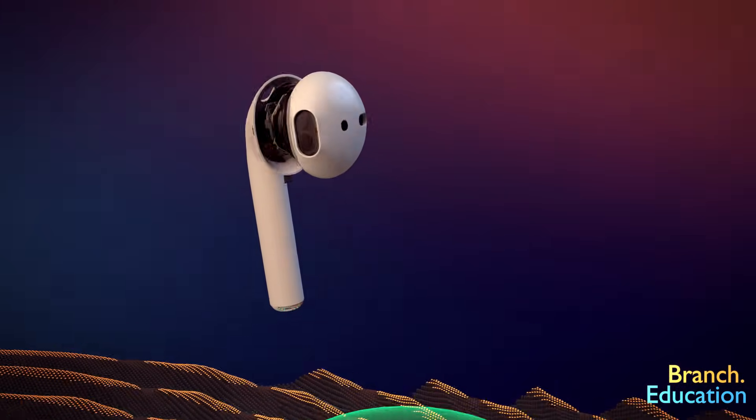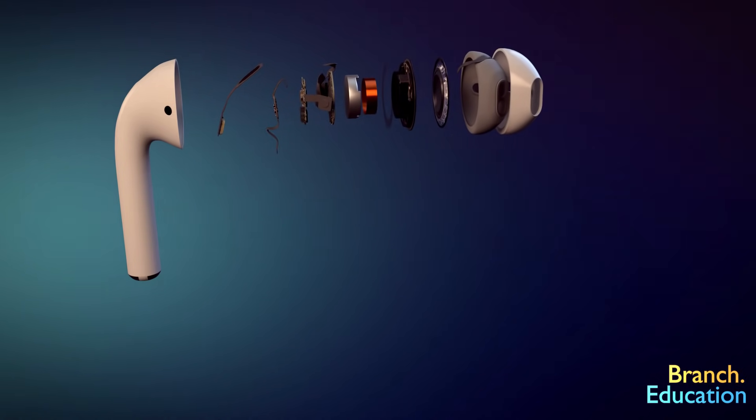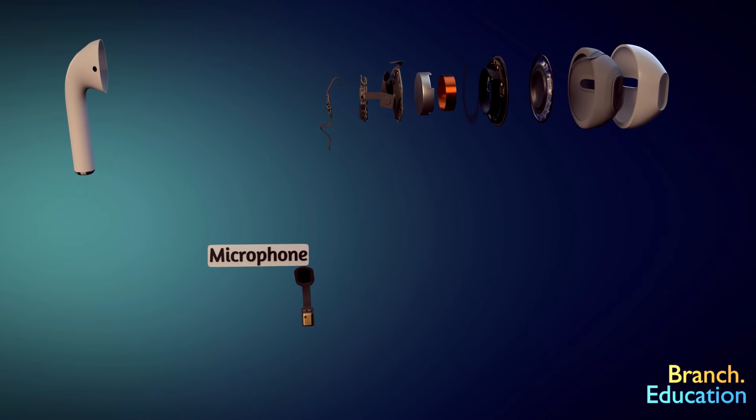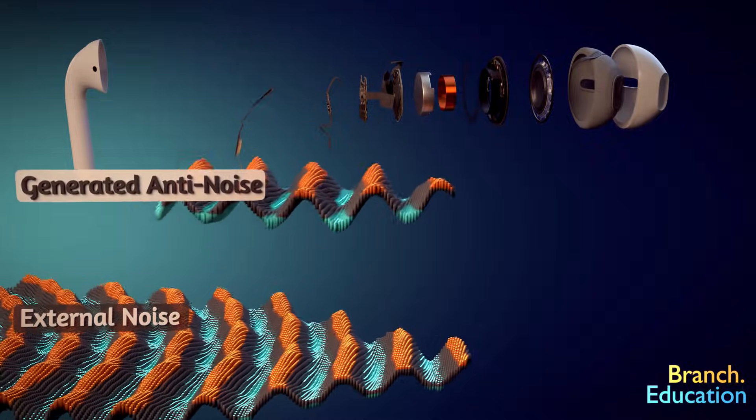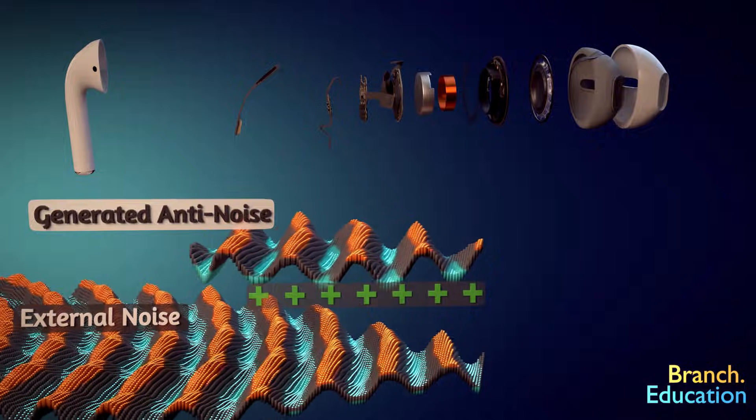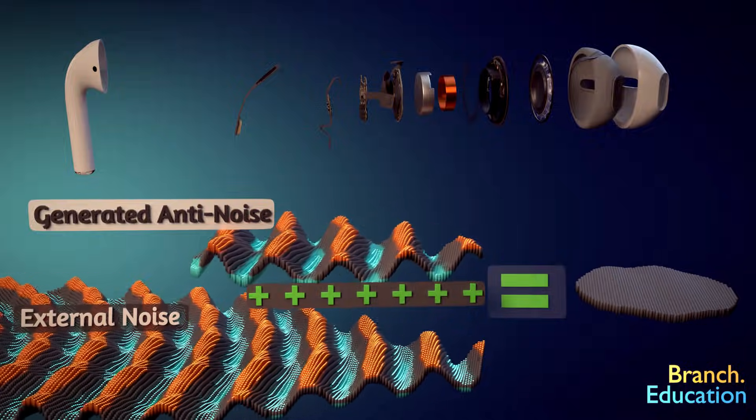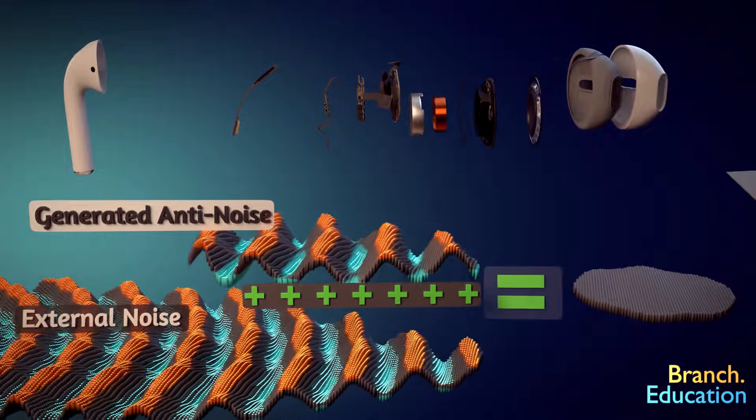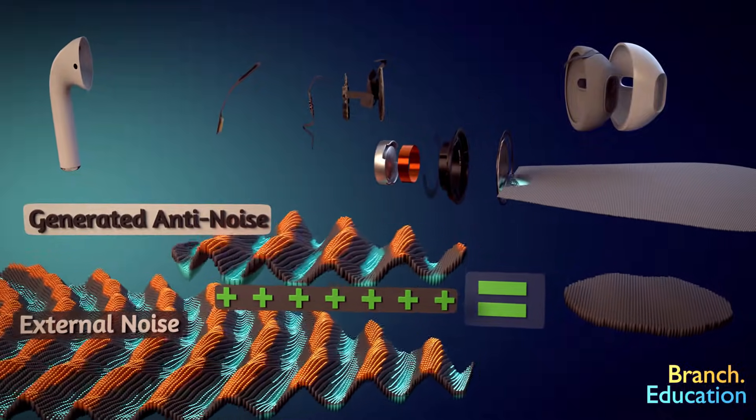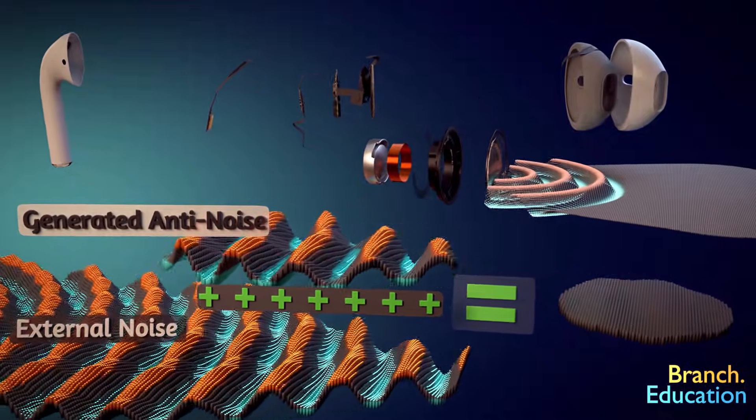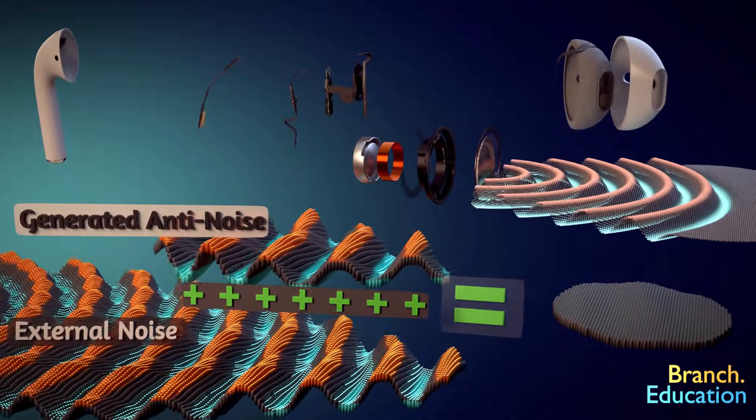In a nutshell, these types of headphones do this by using a microphone to measure the unwanted noise produced by the environment and then calculating an anti-sound wave. This anti-sound wave is added to the waveform of your music or audio and when the combined waveform is played through the headphone speaker, the external noise is eliminated or cancelled out and just the desired audio remains.